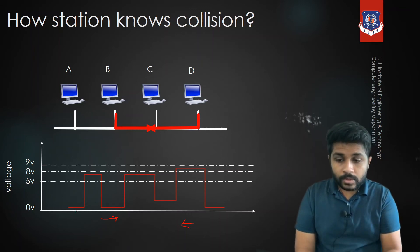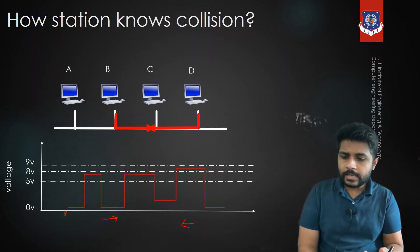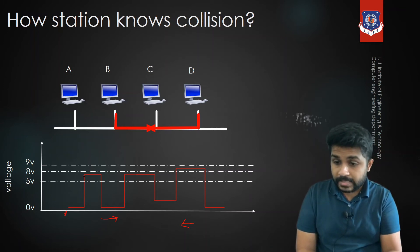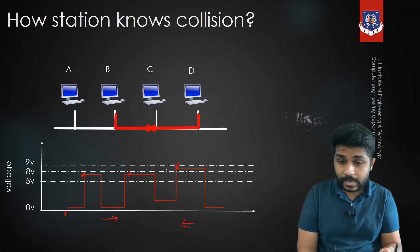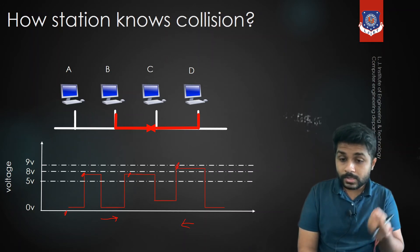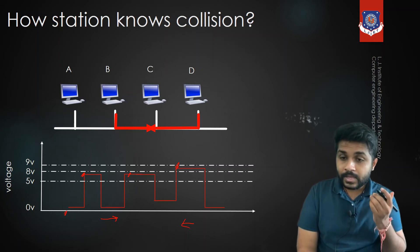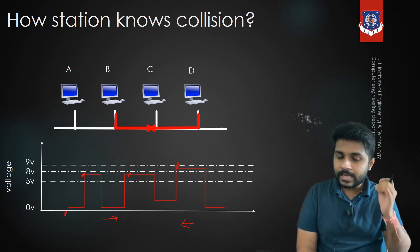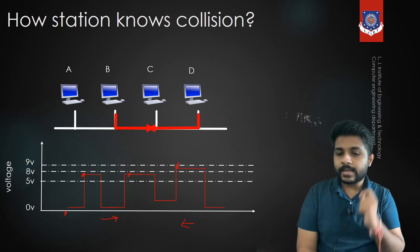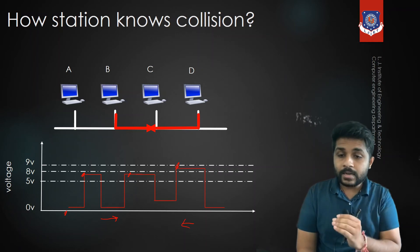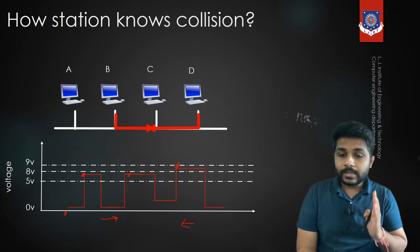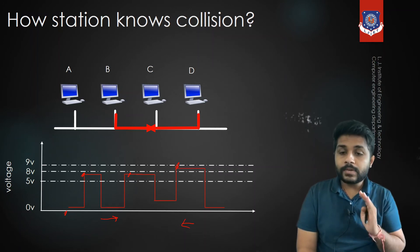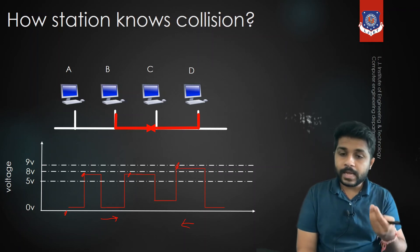When the signals collide, the voltage levels become something irregular — for example, 7 volts, 7 volts, 9 volts, 8.5 volts. In that case C cannot determine whether it is a 1 bit, a 0 bit, or something in between. When a receiver gets a signal with drastic changes in voltage level, it understands there is a collision. The senders B and D, upon detecting the collision, stop sending data and wait before retrying.